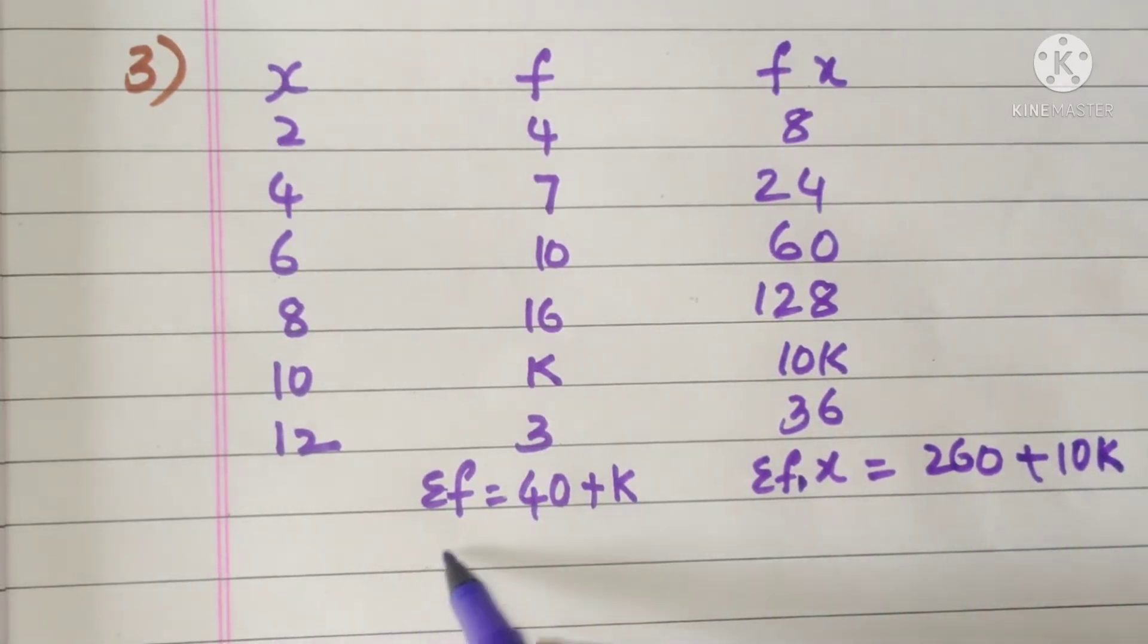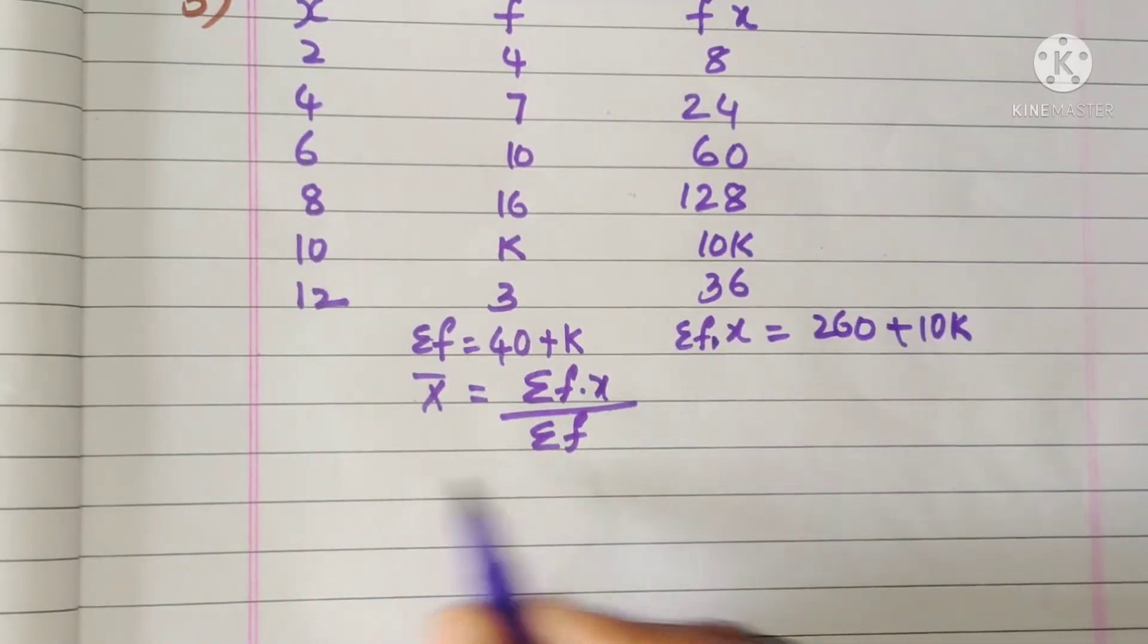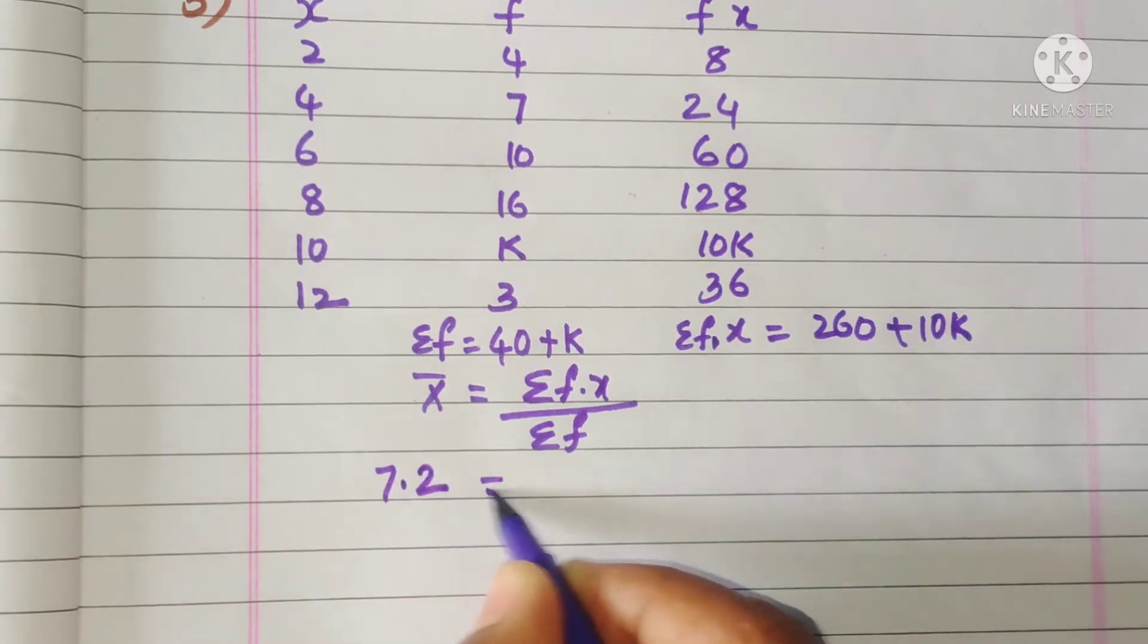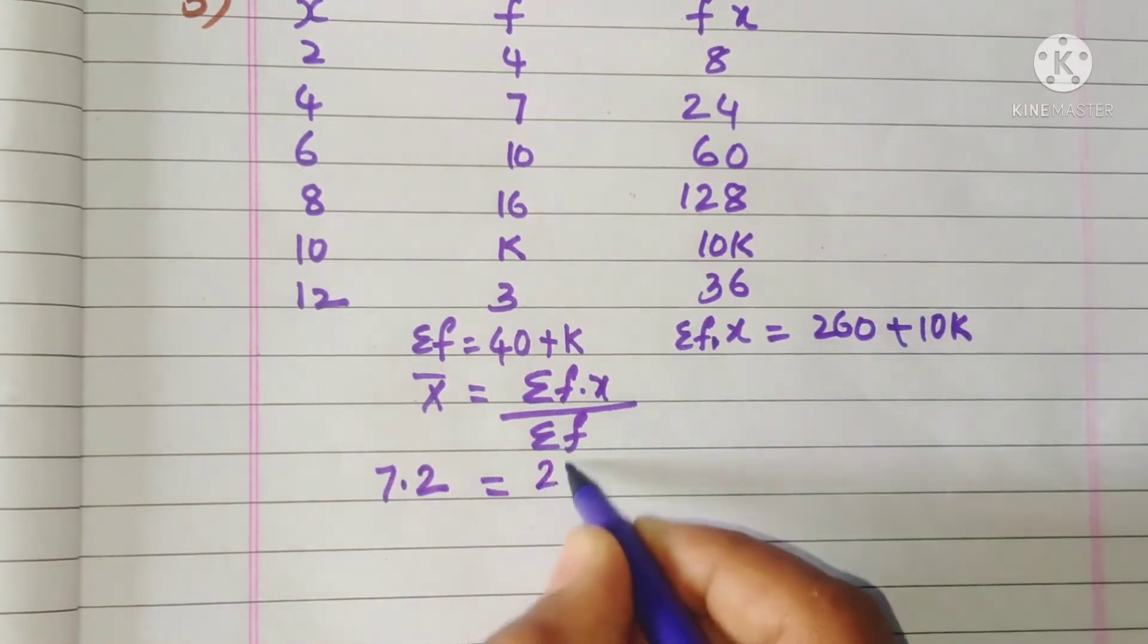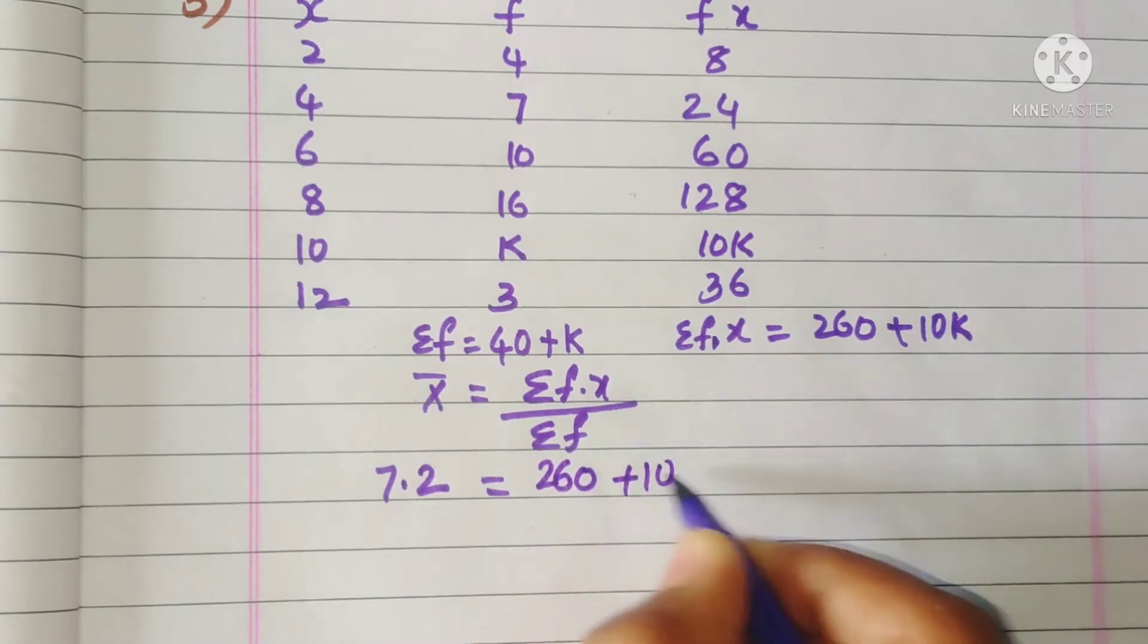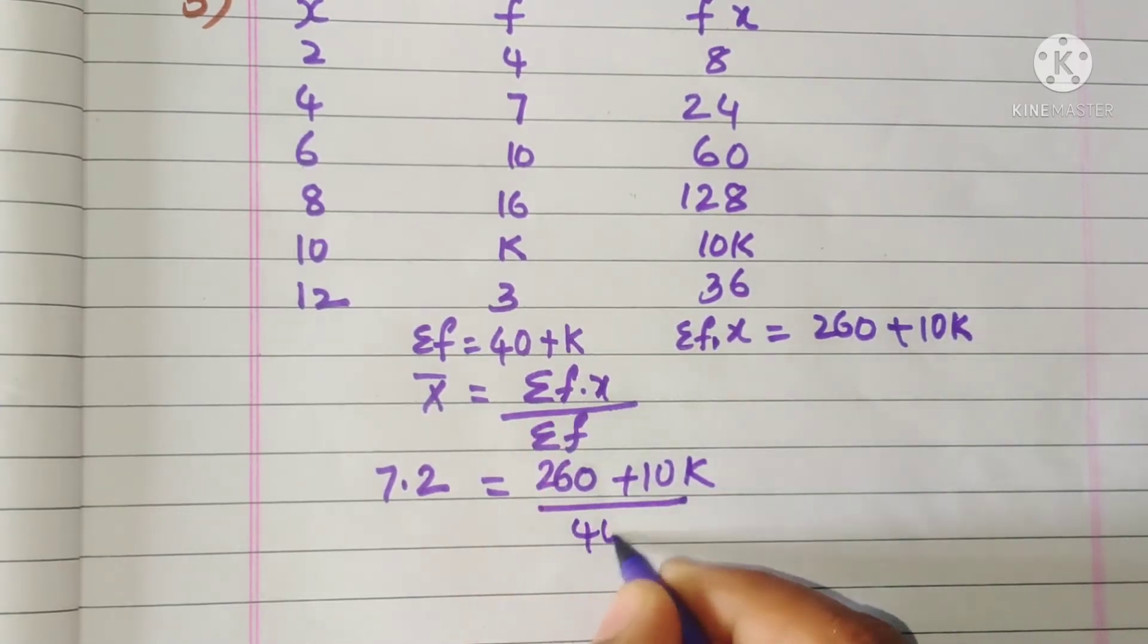So what is the formula here? x bar is equal to sigma fx by sigma f. But in the problem the mean given is 7.2, so this 7.2 is equal to sigma fx by sigma f.